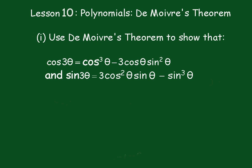Lesson 10: Polynomials and De Moivre's Theorem. Use De Moivre's Theorem to show that cos3θ equals cos³θ minus 3cosθ sin²θ, and sin3θ equals 3cos²θ sinθ minus sin³θ. First of all, we'll start off and let z equal cosθ plus i sinθ.